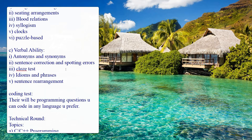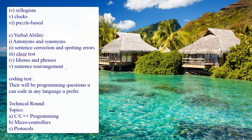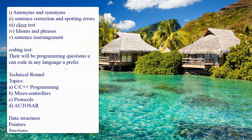The third section is verbal ability. Topics include sentence correction, spotting errors, cloze test, antonyms and synonyms, idioms and phrases, and sentence rearrangement. These are the three sections and the topics included in the aptitude round.